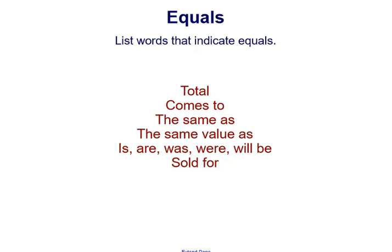Is, are, was, were, and will be, all different variations, of course, of is, and then sold for.